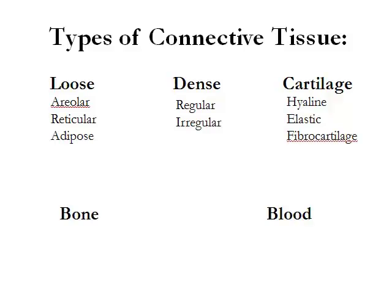Connective tissue differs from epithelium in that it is not entirely made up of cells. In fact, it is made up of cells plus secretions by the cell in the form of fibers and ground substance.